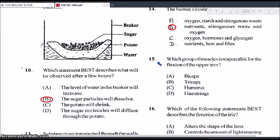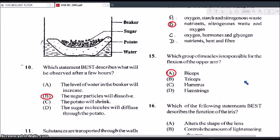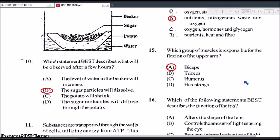Similarly with option C. Although oxygen and hormones will be correct, the glycogen, once again, that is a large molecule that is not transported in the blood. And then for option D, fiber is not transported in the blood. Okay, question 15. Which group of muscles is responsible for the flexion of the upper arm? So by flexion, you mean when you're flexing your arm, showing your muscles. So this one will have to be A, the biceps. So the biceps is the muscle that is going to get bulgy when you flex your arm. If they were talking about the extension of the arm, it would have to be the triceps that would be contracting.